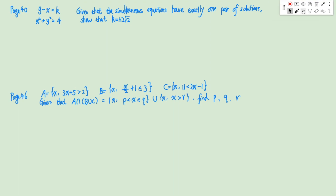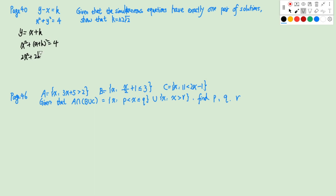This question is on page 40. We have two equations and we know they have exactly one pair of solutions, so that means it's a repeating solution. We need to show that k equals positive or negative 2√2. We can represent y with x, so y equals x plus k, and we plug this into the second equation. So we have x² + (x+k)² = 4, giving us 2x² + 2kx + k² - 4 = 0. Because this has exactly one pair of solutions, the discriminant will be 0.